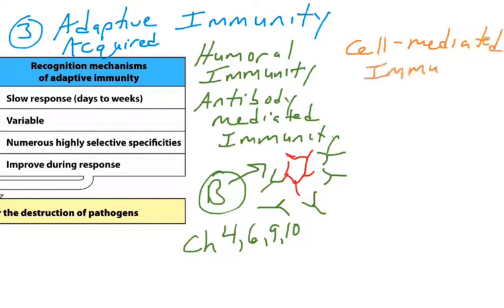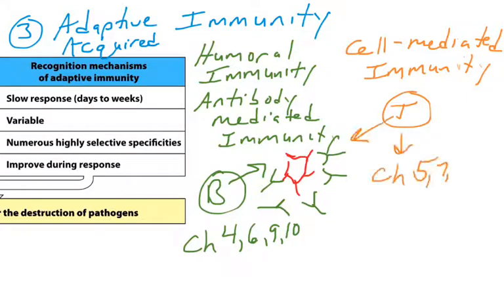Unit 3, the other arm of adaptive immunity, is cell-mediated immunity — these are T cells. There are different types of T cells in the body, but T cells also have the ability to recognize a pathogen, recognize an infection, and then promote clearance of that infection. We'll have to learn about the different types of T cells, how they recognize a pathogen, and what they do after recognition. T cells are covered in Chapters 5, 7, 8, and 10 of the textbook.